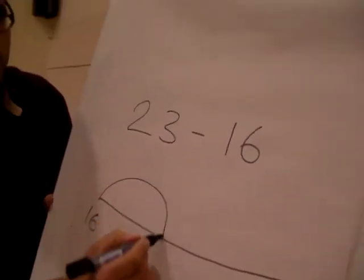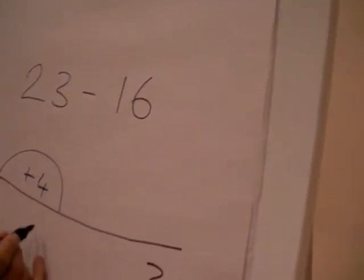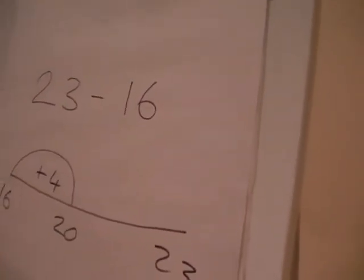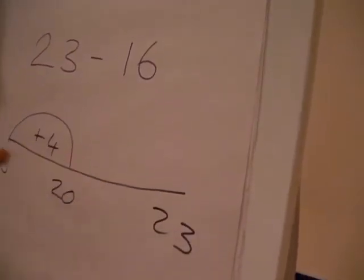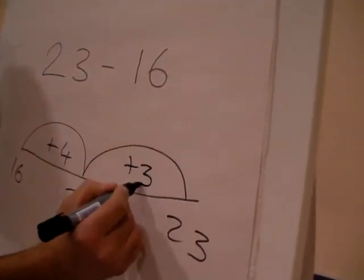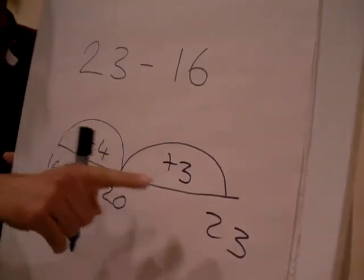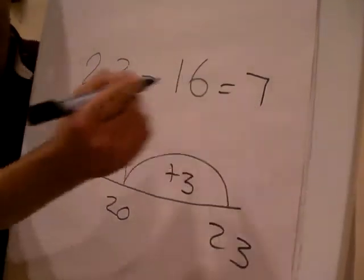So they go like this, add 4 takes me to 20. To get from 20 to 23, all I have to do is add 3. All they do now is add 4 and 3 together, they still get the same answer of 7.